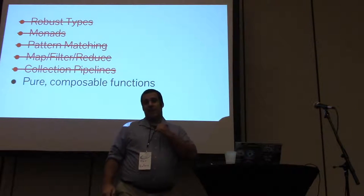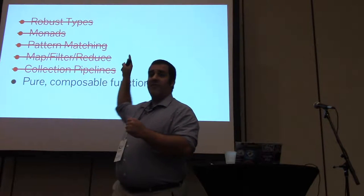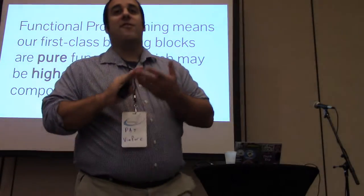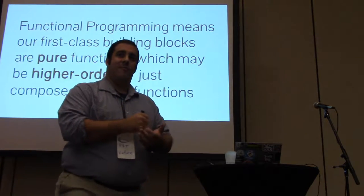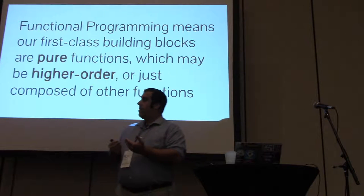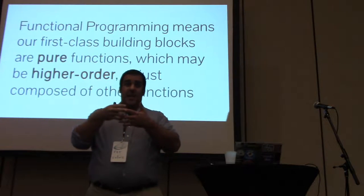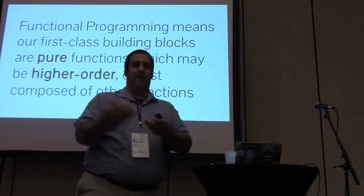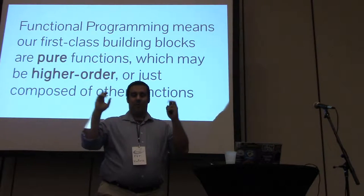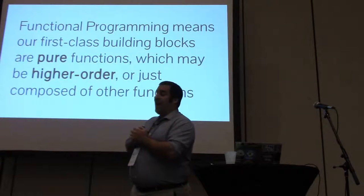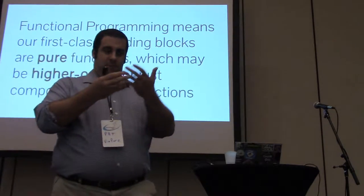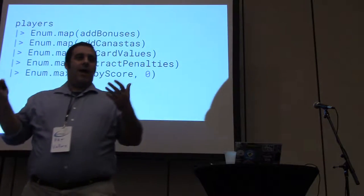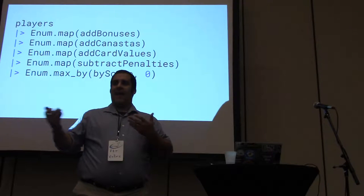Functional programming is where your first class building blocks are functions. Pure composable functions. When I say pure, I mean the output of a function only depends on its input. When I say composable, it means that functions can be chained together, in some cases higher order functions, which are functions that take other functions as parameters. Like map, filter, reduce. So map, filter, and reduce is a symptom of functional programming, but you don't actually have to have a map, filter, and reduce to say I'm working on a functional programming language.